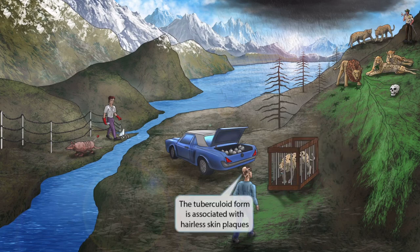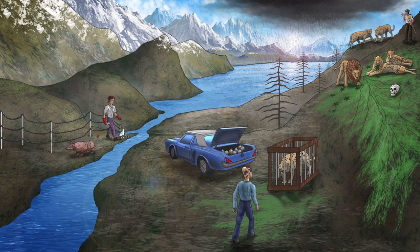Did you notice that our poacher villain guy has a pretty interesting hairdo? Look at those patches of hair on top of his mostly bald head. We've intentionally made him look this way to help you remember that the tuberculoid form is associated with hairless skin plaques.